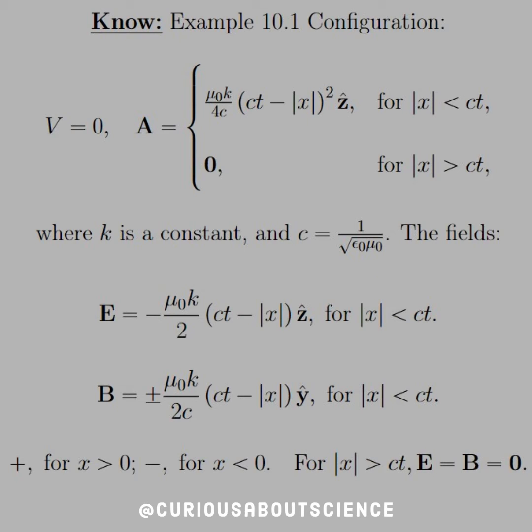So what we know about the example from 10.1 configuration is we have a scalar potential that is 0, and we have a vector potential that goes such as mu naught K over 4C, parentheses CT minus the absolute value X, parentheses closed square in the Z-hat direction. Now, what this says here is that the absolute value of X has to be less than CT in order for there to exist anything. Here K is just another constant, and C, the speed of light, is 1 over square root epsilon naught mu naught.